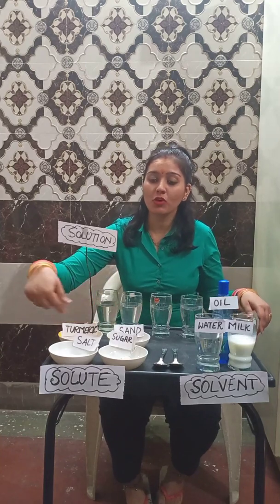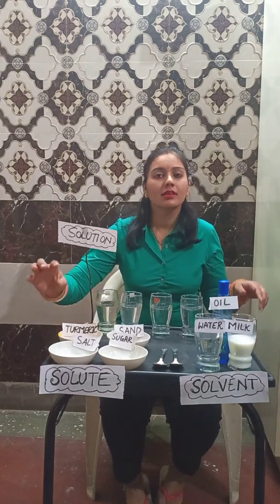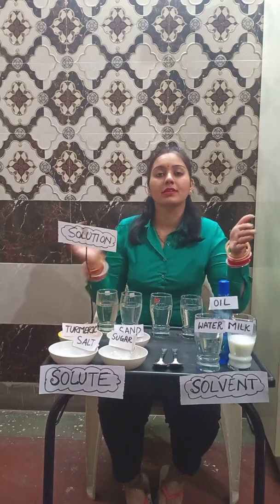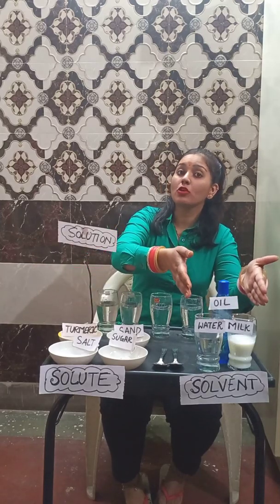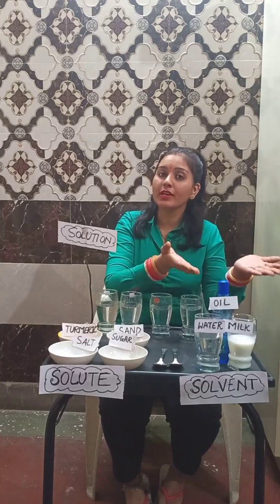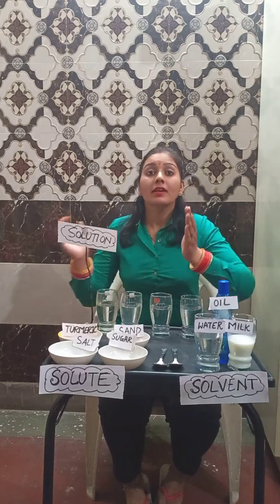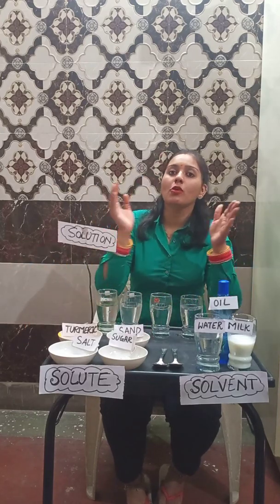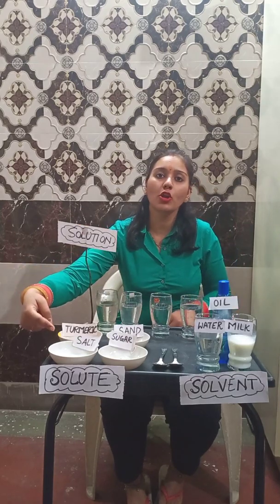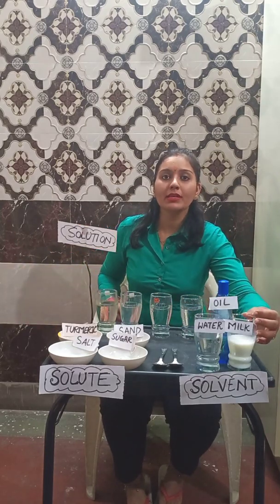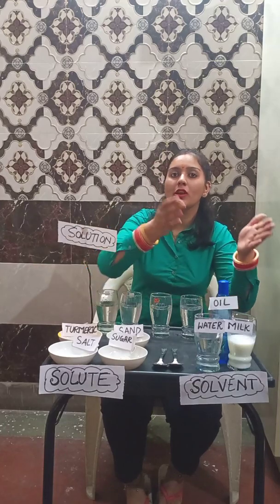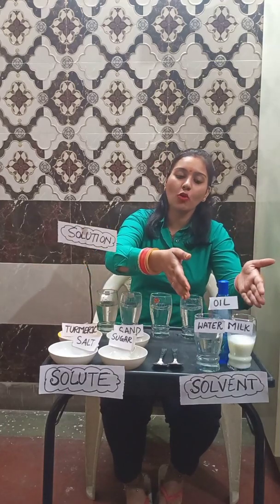We have some solids — these are called solutes — and some liquids that are called solvents. The substances which dissolve in liquids are called solutes, and the liquids in which the substances are dissolved are called solvents.